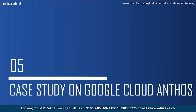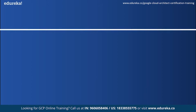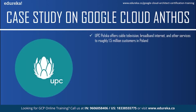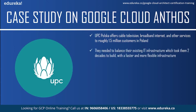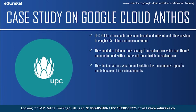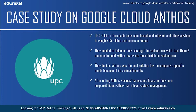Now let us move on to the case study on Google Cloud Anthos, featuring UPC Polska. UPC Polska is a Polish telecommunication arm of Liberty Global Europe, offering cable television, broadband internet, and other services to roughly 1.5 million customers in Poland. The problem they faced was balancing their existing IT infrastructure — which took two decades to build — with a faster and more flexible infrastructure. They decided to opt for hybrid IT, which would give them the speed to market they needed while maintaining their existing infrastructure.